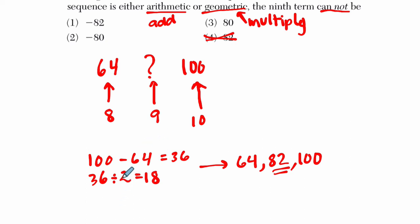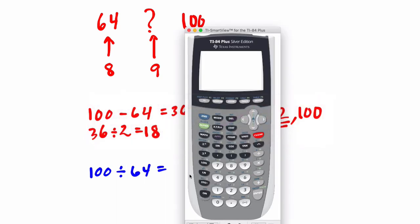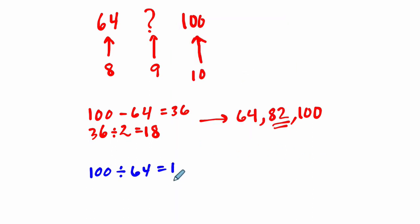Let's go to geometric next. So now with our geometric sequence, we want to divide to find what we're multiplying by. Before we subtracted to find what we're adding, now we divide to see what we're multiplying by. So we divide 100 by 64, and that is 1.5625.